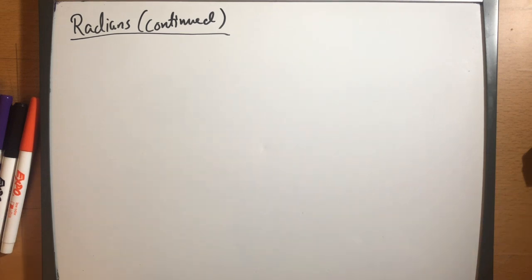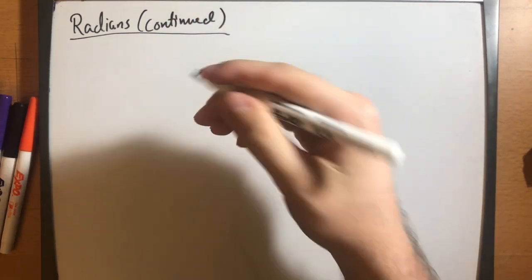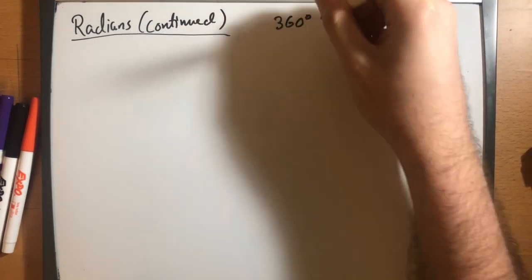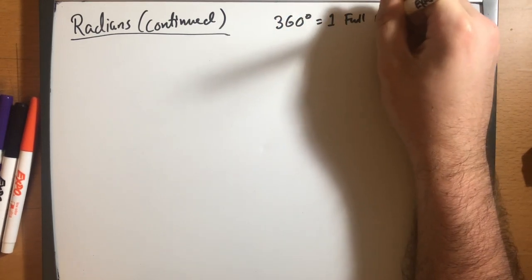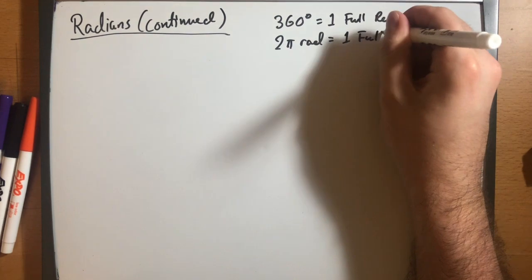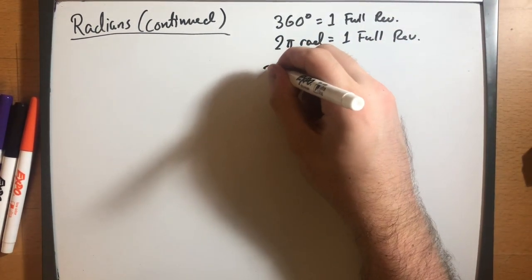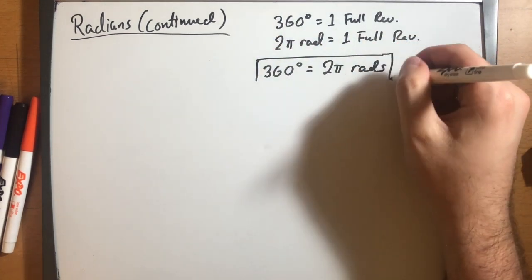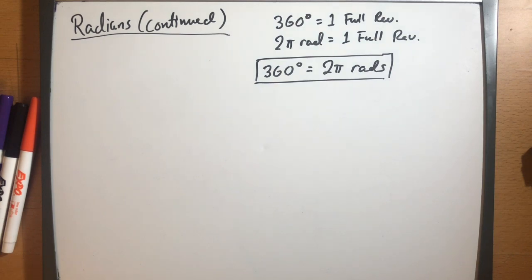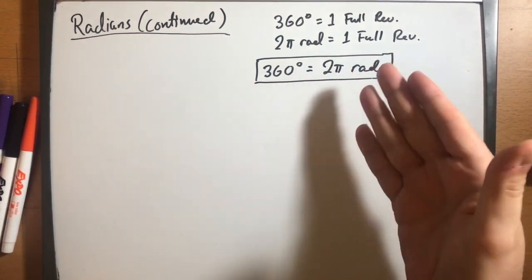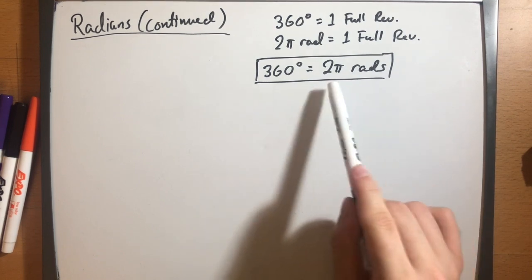What we saw in the last video was that there is a relationship between degrees and radians. If 360 degrees is one full revolution and 2 pi radians is one full revolution, then it can be established that 360 degrees is equal to 2 pi radians. These are both units of measuring an angle, just like feet and inches both measure distance — they're two separate units, but you can find a conversion that relates them together.